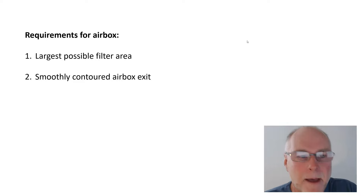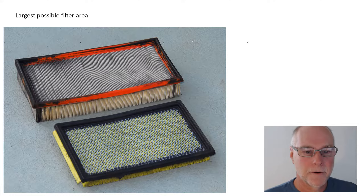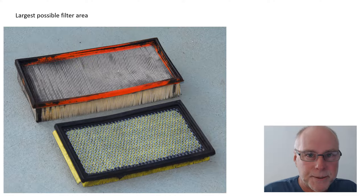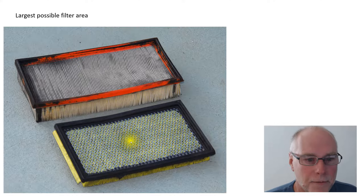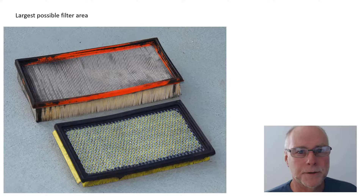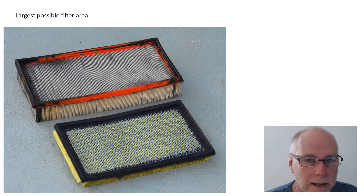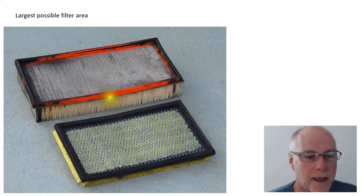Here we've got two filters that aren't very different in area when you look down on them from above, but the pleats on one are much deeper than on the other. If you spread the paper out, you'll see one has well over double the filter area of the other. I'm using paper filters and have no problems with them whatsoever — if they're sized appropriately, they're excellent at catching dirt, which is the primary purpose, and yet they flow very, very well. You want a filter with the largest possible area — that's the area of the paper when it's all spread out, which you gauge by looking at the top view and the actual depth of the pleats.